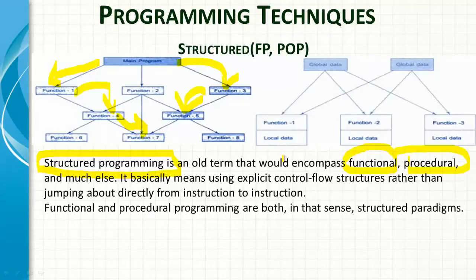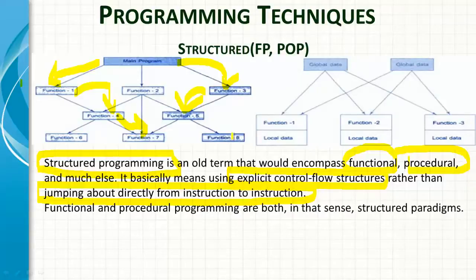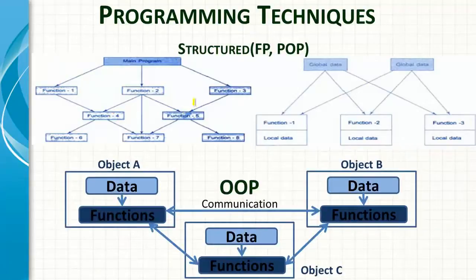Structured programming was a combination of functional and procedural programming, and much more. It used explicit control flow structures rather than the traditional jumping directly from instruction to instruction as in machine-level programming. Instead, code was divided into reusable components and we moved from one control flow structure to another. Functional and procedural programming are both structural paradigms in that sense.